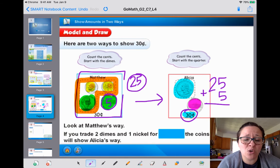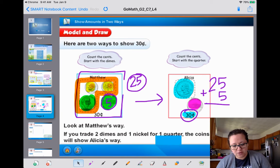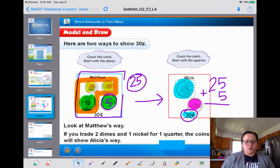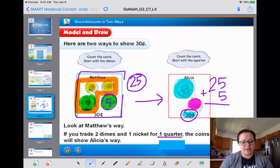They are just showing you that Alicia used less coins than Matthew to get her answer. She used less coins. Matthew didn't, but they still got their answer. That's what they're trying to show you right now. So if you trade two dimes and one nickel for a quarter, the coins will show Alicia's way. So they still both got their answers, but they just did different ways, and that's cool.